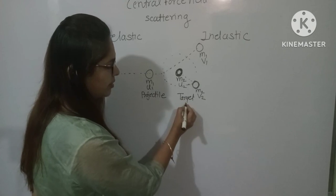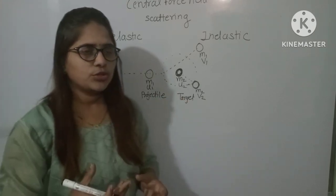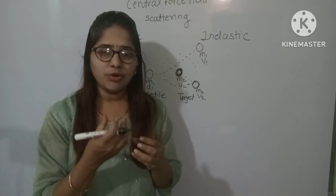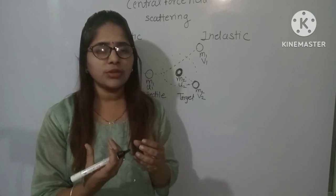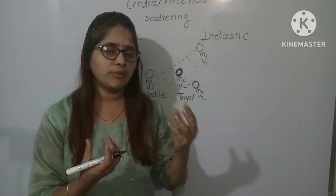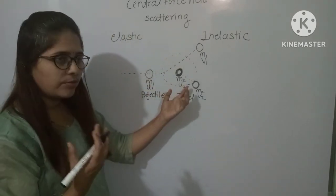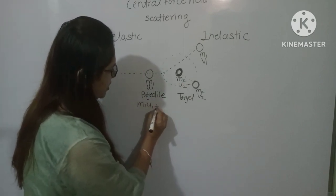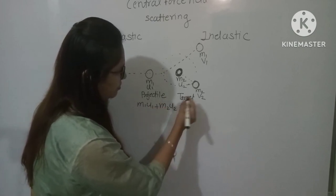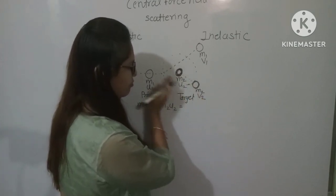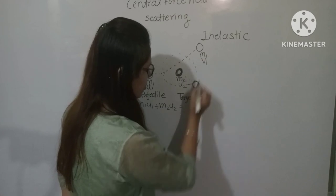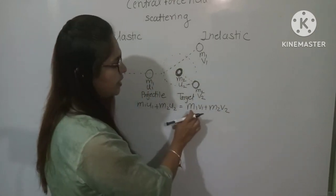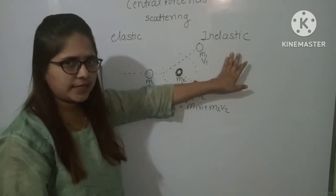Let p1 be the momentum of the projectile particle and p2 be the momentum of the target particle. The law of conservation of momentum states that the momentum before collision equals the momentum after collision: m1*u1 + m2*u2 = m1*v1 + m2*v2. This law of conservation of linear momentum is obeyed by both elastic and inelastic scattering.